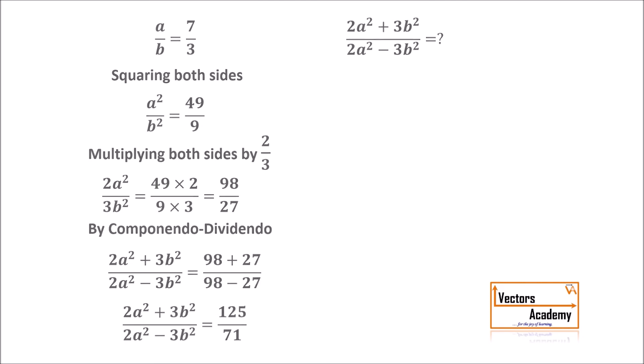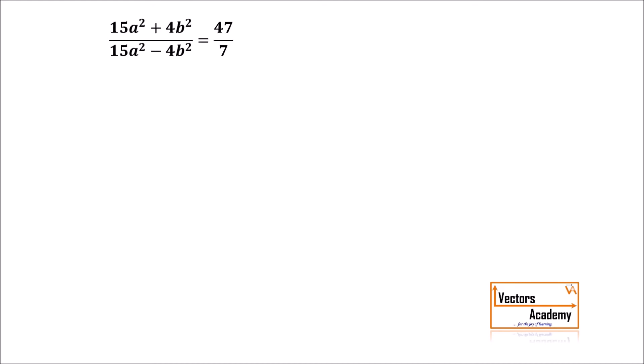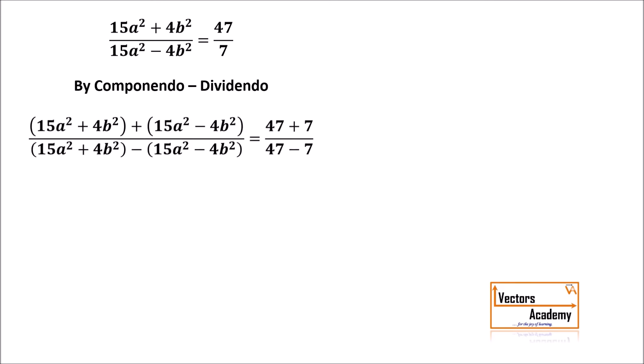You can try those questions on your own. Now let us look at this question: 15A² plus 4B² upon 15A² minus 4B² is equal to 47 by 7, and we need to find the ratio A/B — the opposite of the previous question. We can see this ratio was obtained by Componendo Dividendo since there is a plus and minus sign, so applying Componendo Dividendo again will simplify it. After applying, we get numerator plus denominator upon numerator minus denominator on both sides: 47 plus 7 upon 47 minus 7.